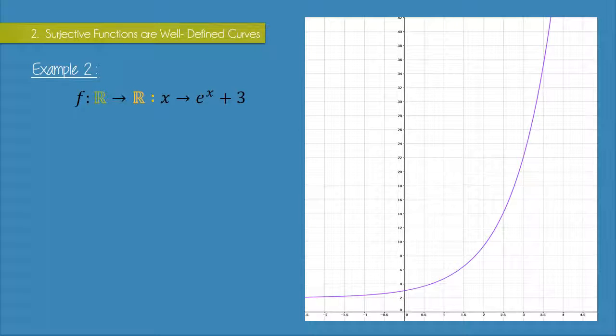I have a second example here, and this time the function is an exponential function, e to the power of x plus 3. So is this function surjective? Well, for this function to be surjective, we would have to be able to generate all of the real numbers using this function. So our range would have to be equal to the codomain, which is the set of all real numbers. Well, hopefully you can see that that is not the case. Because e to the power of x will always be positive, regardless of the value of x. So the question is then, how can we make this function surjective? How can we redefine the codomain to make it surjective? So maybe you might like to pause the video now and see if you can figure that out.